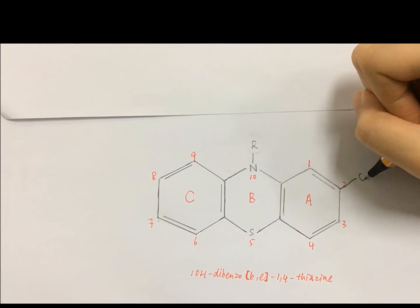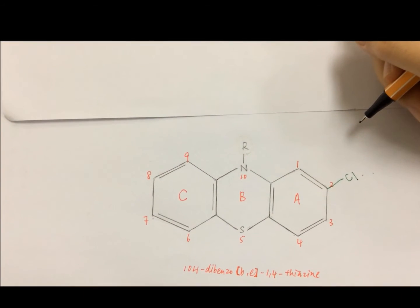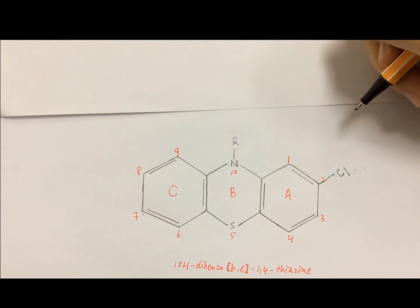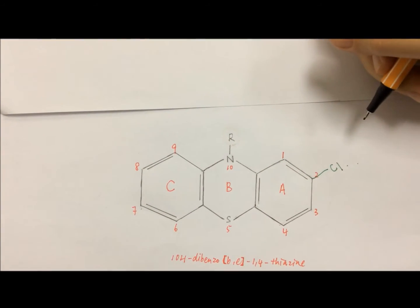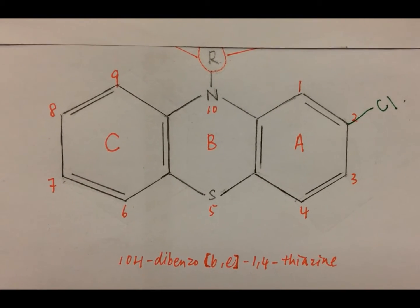Chlorine, or Cl, is a substituent at C2, and it's an electron withdrawing group which contributes to the asymmetry of the phenothiazine ring. Without the chlorine atom at carbon 2, there will be no activity.